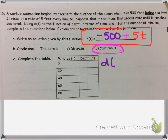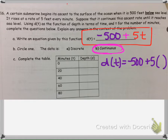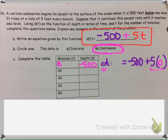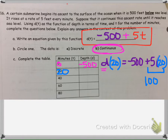The next part says to take the function and find the depth at given times. At zero minutes, plugging in zero for T: negative 500 plus 5 times 0 equals negative 500. Remember, we always multiply before we add. So we get negative 500, and that makes sense — the submarine begins 500 feet below the surface before any time has started. At 20 minutes: 5 times 20 is 100, and negative 500 plus 100 is negative 400 feet below sea level.